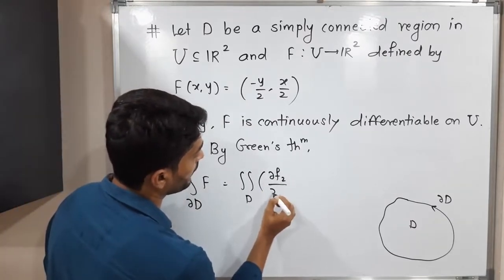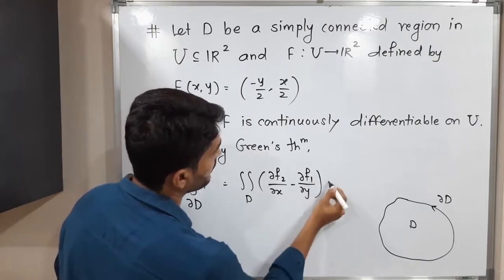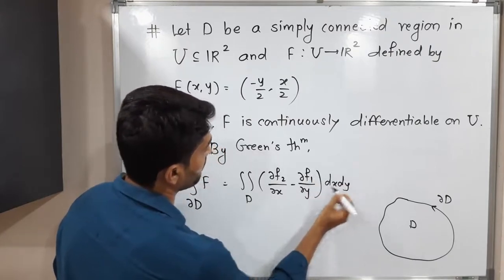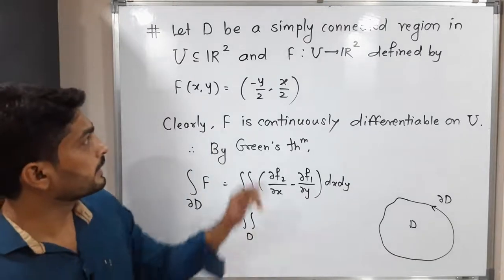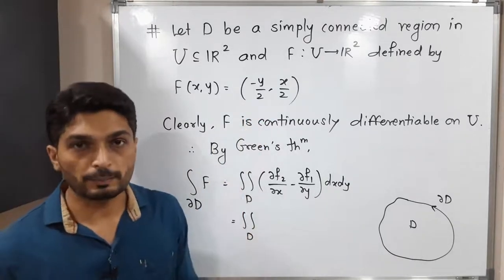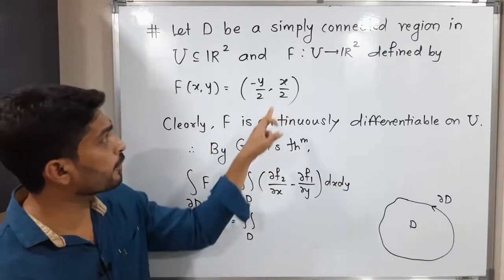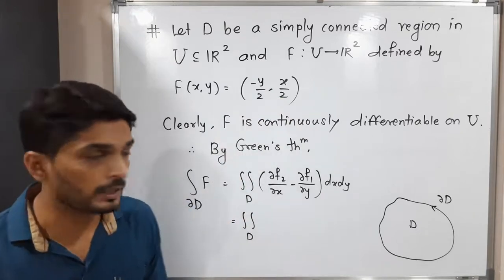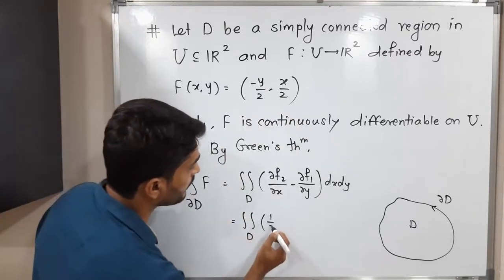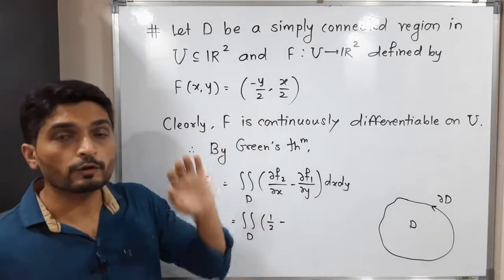Let us find what is F₂ and what is F₁. This is our F₁: -y/2, and this is our F₂: x/2. So let us find the derivative of F₂ with respect to x. 1/2 is constant, derivative of x is 1, so we'll have 1/2.